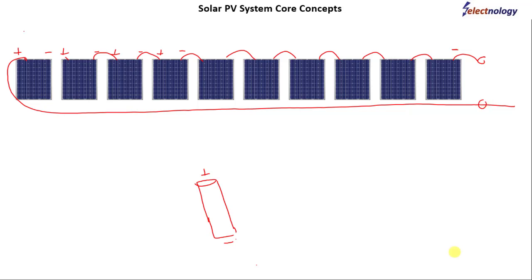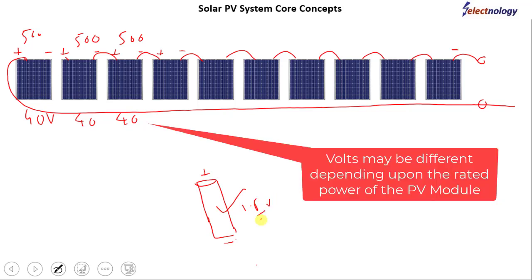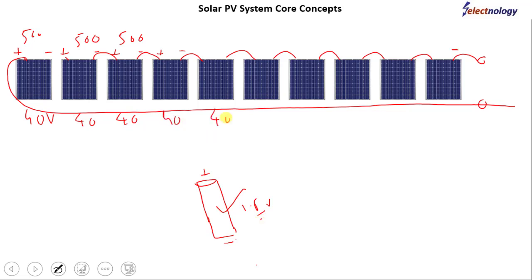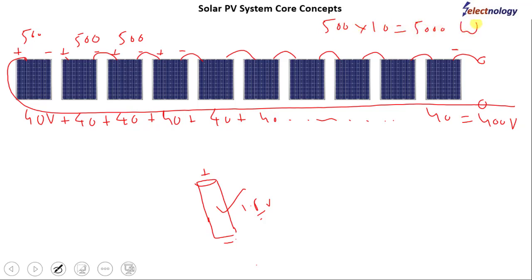Assume each PV module is 500 watts and produces 40 volts when operating — PV modules can go up to 40 or 45 volts. When connected in series, their voltages sum up. With 10 modules, the total voltage becomes 400 volts, and the total power is 500 watts times 10, which equals 5000 watts.